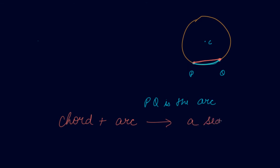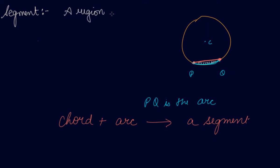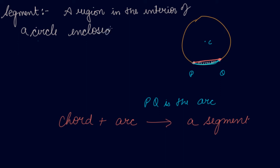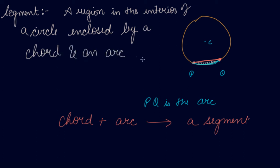Now, this is a circle. This area — if I say this area — is the segment of the circle. PQ this is a chord, PQ the curve one is an arc. When a region in the interior of a circle is enclosed by a chord and an arc, it is called a segment. A segment is a region in the interior of a circle enclosed by a chord and an arc.